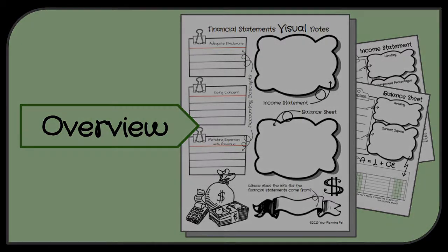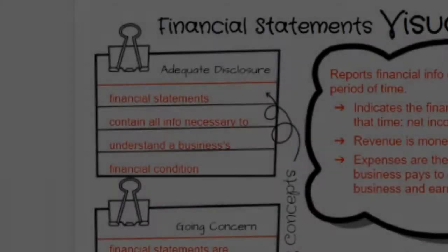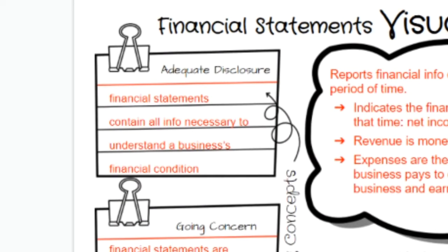This is the overview. We're going to start with three different accounting concepts. The first one is adequate disclosure, and this states that financial statements contain all the information necessary to understand a business's financial condition. That means that accountants don't leave anything out — they give adequate disclosure.